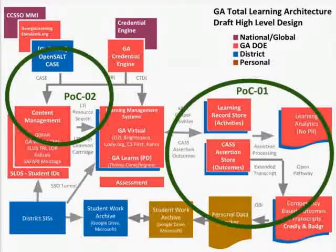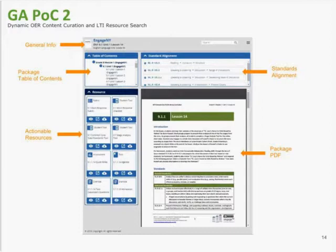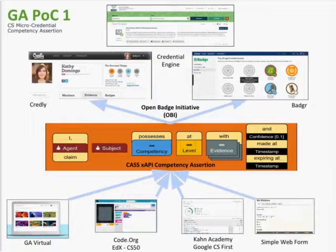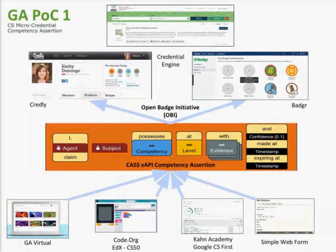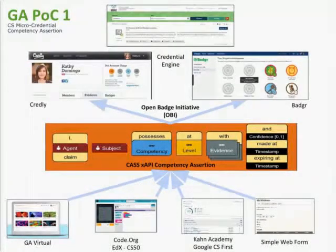Proof of concept two is about dynamic OER content and LTI resource search — how we embed aligned content into multiple learning management systems. Proof of concept one is about the idea of competency assertions: the idea that Georgia Virtual, Code.org, edX, Khan Academy, Google CS First, and simple web or mobile forms can all create competency assertions about an agent claiming that a learner possesses a competency, a skill, or an ability at a particular level based on certain evidence with confidence at a certain time.